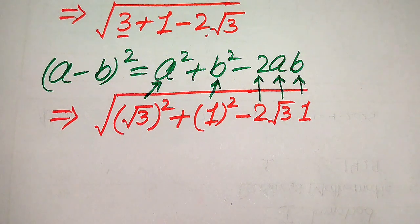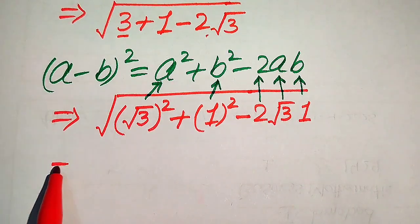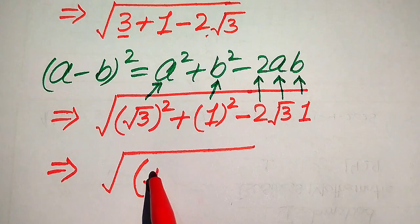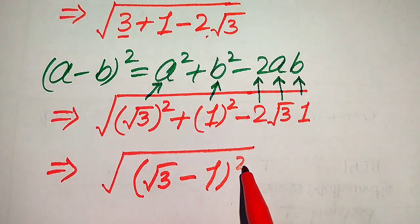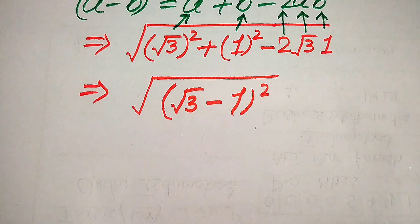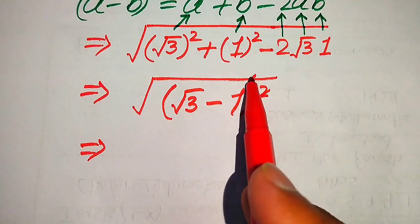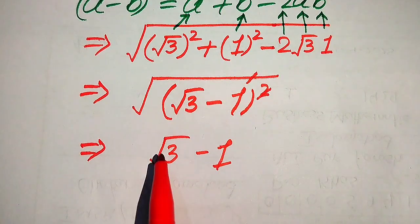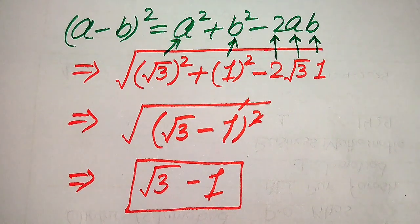Combining all of these terms equals (a minus b) whole square, where a is square root of 3 and b is 1 — giving us (square root of 3 minus 1) squared. Since the square root and square appear at the same time, they cancel out, and we get the final simplified answer: square root of 3 minus 1. Thank you so much for watching — please subscribe to my channel for more exciting videos.